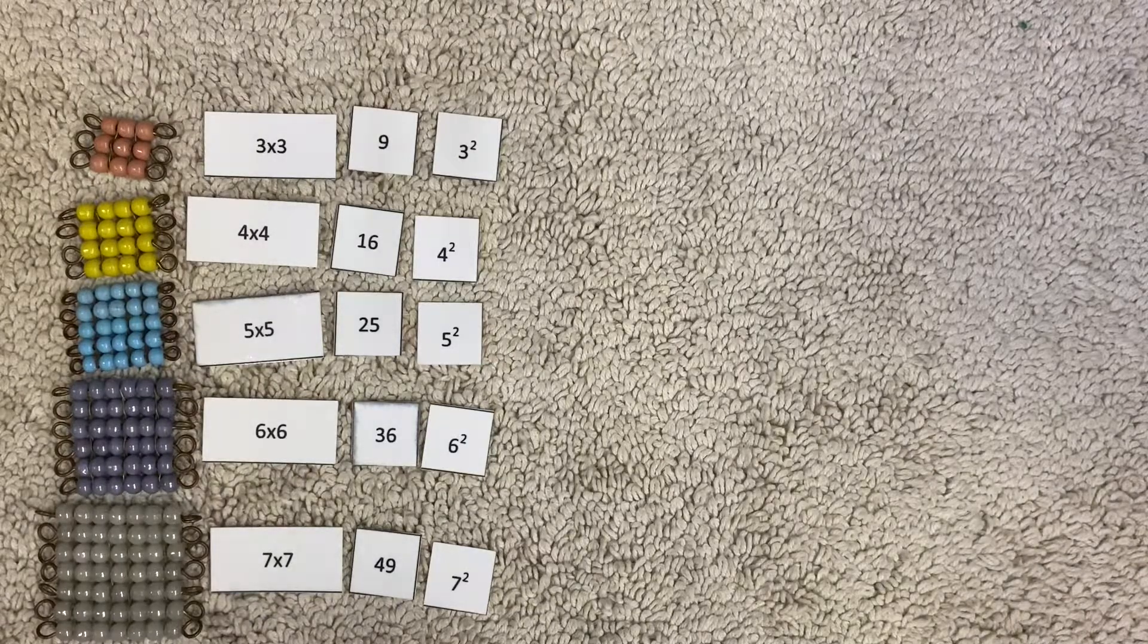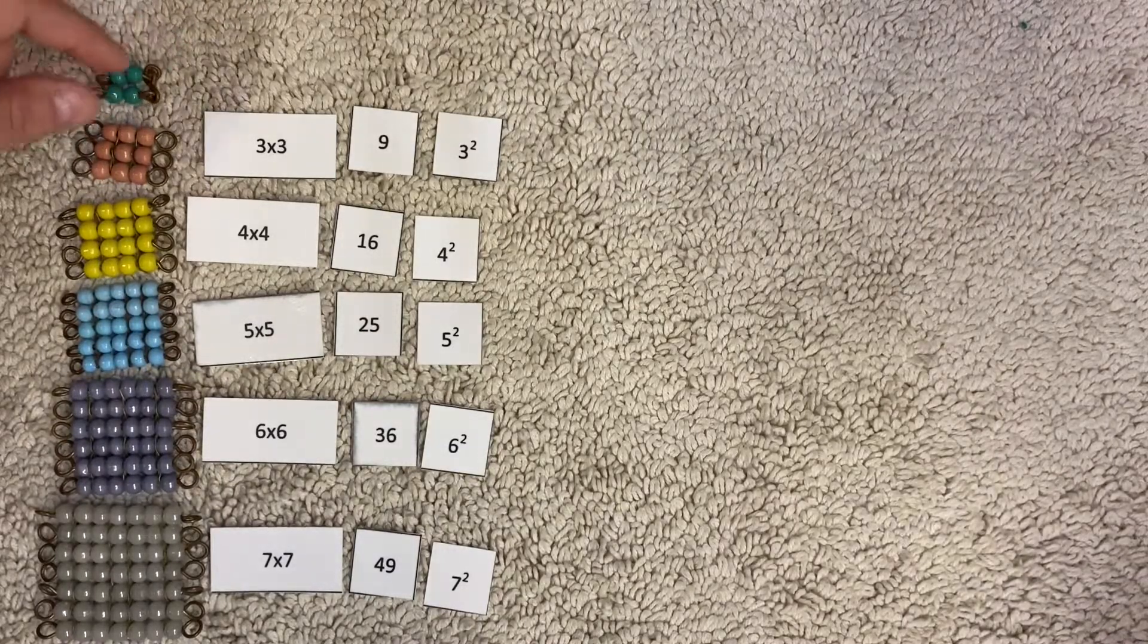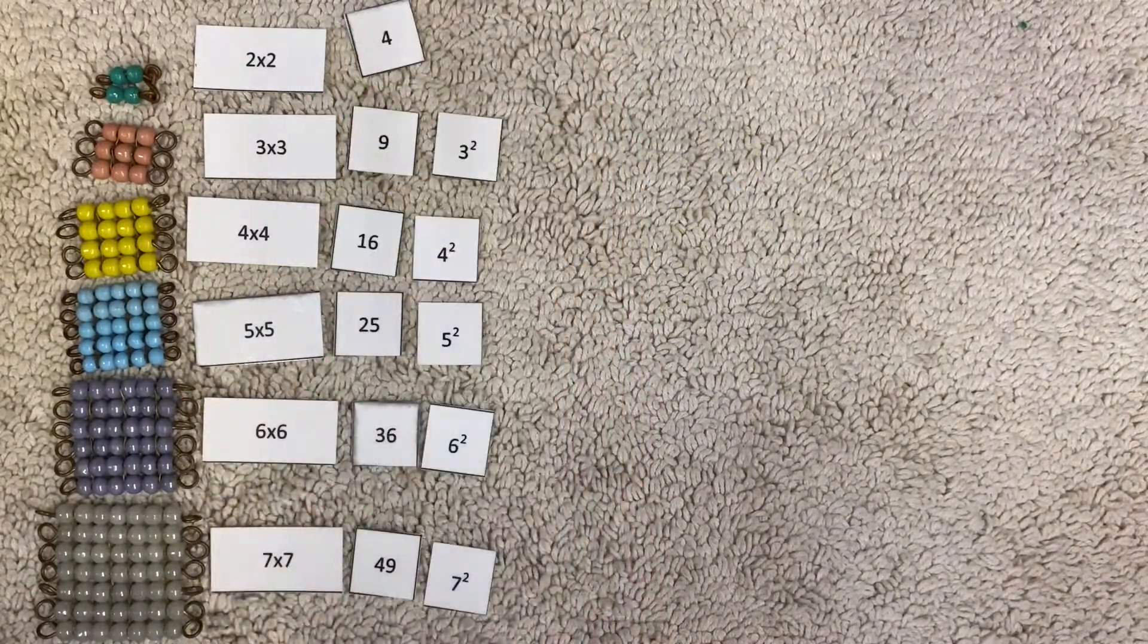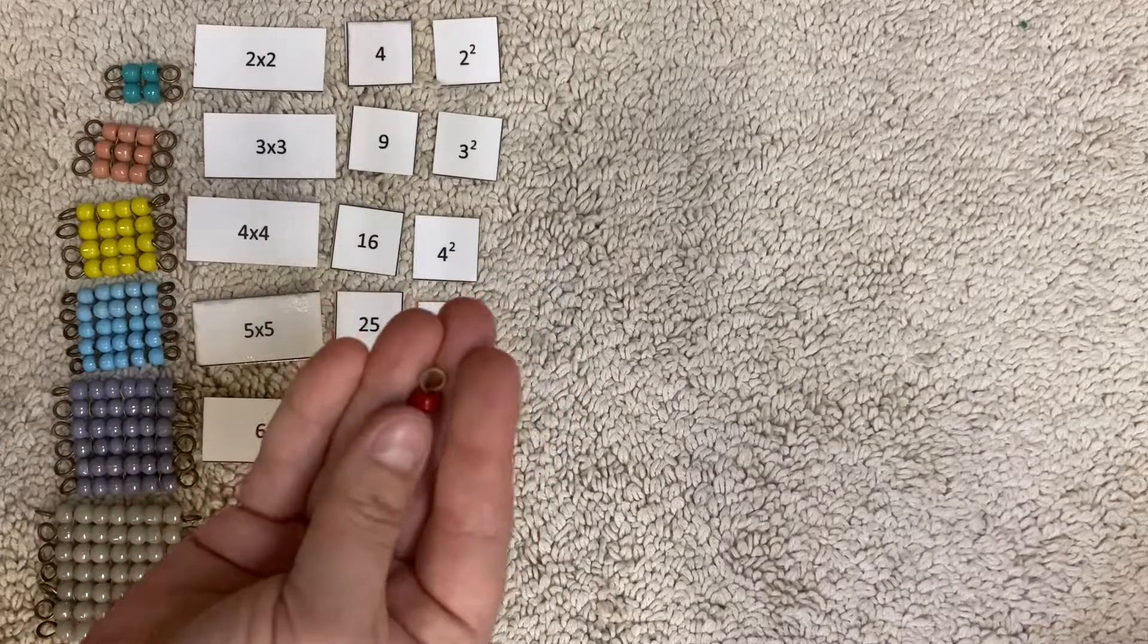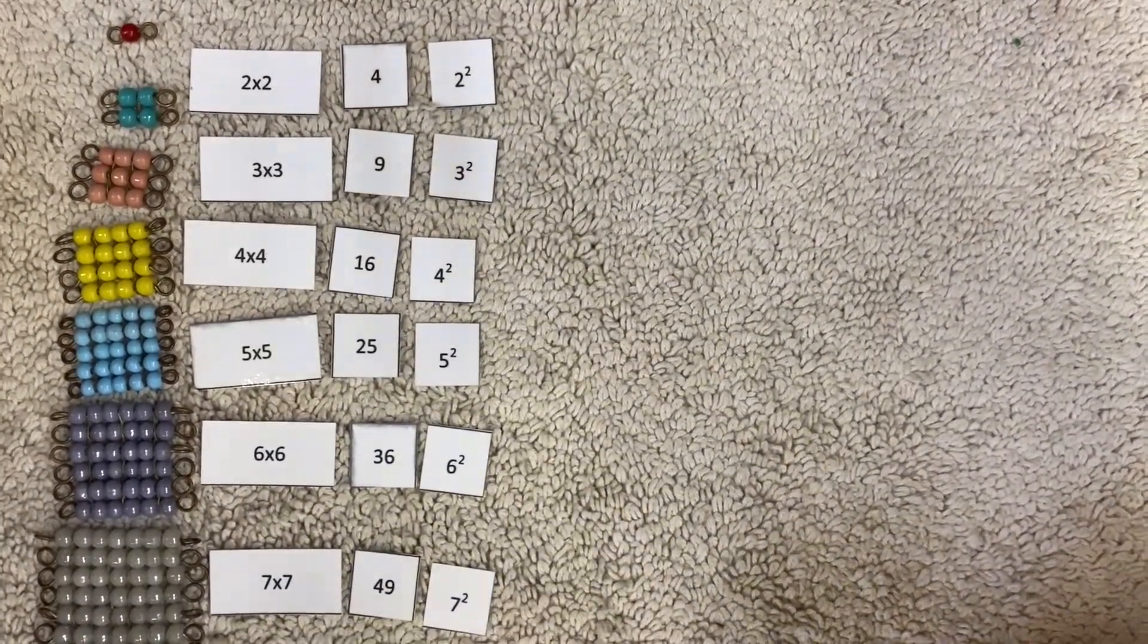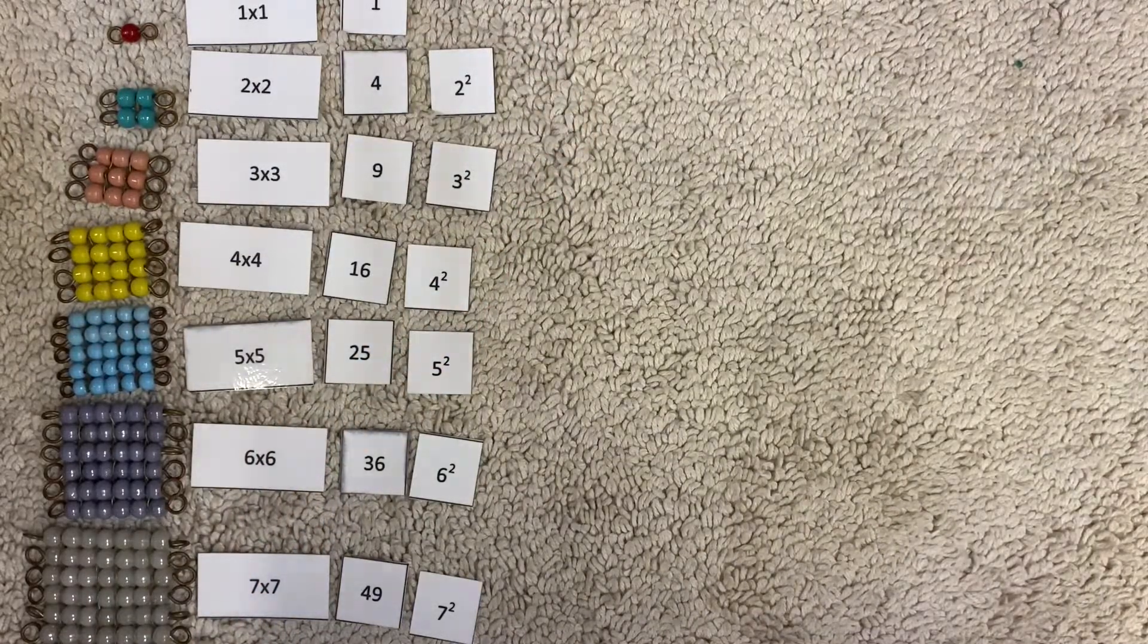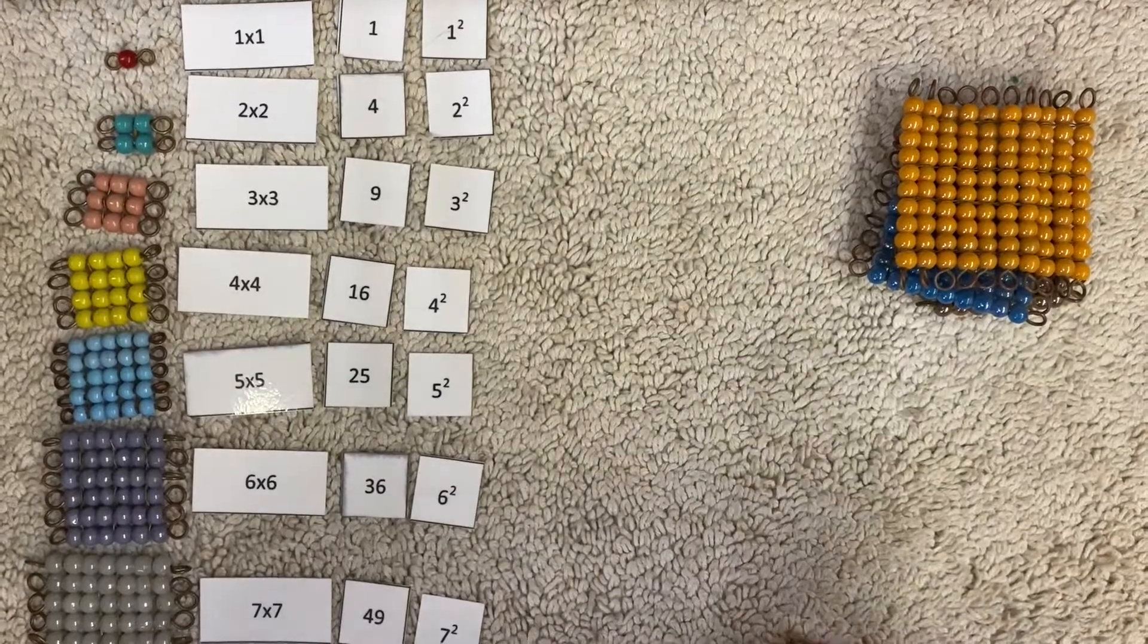Let's do the two square. Look how teeny tiny this guy is. We have two times two. Two times two is four. And we notate it. We have a two and a baby two. Here's the one chain. You can barely see it. And we're going to do one times one. Can you guys figure that answer out? One. And then one and a baby two.